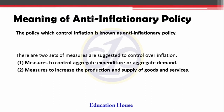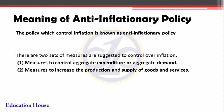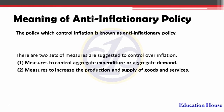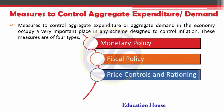Let's see the meaning of anti-inflationary policy. The policy which controls inflation is known as anti-inflationary policy. To control inflation, there are two different types of measures to be taken: first, measures to control aggregate expenditure or aggregate demand, and second, measures to increase the production and supply of goods and services. By this way we can control the inflation situation.